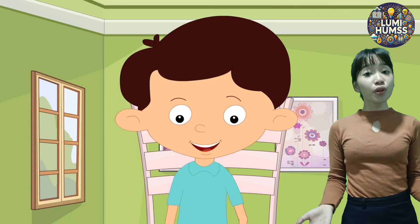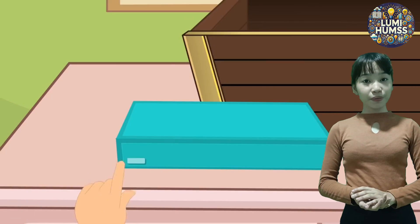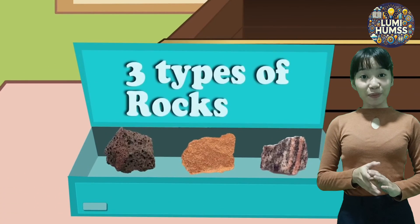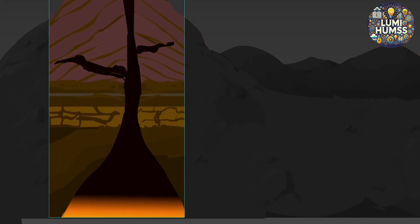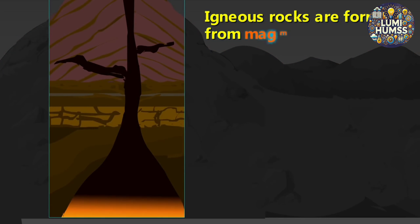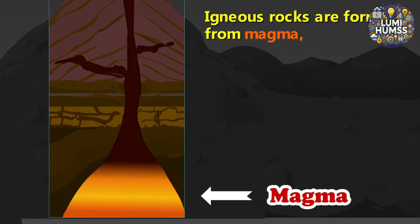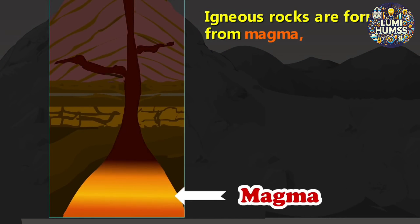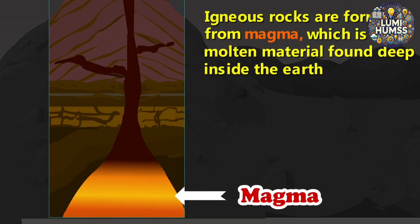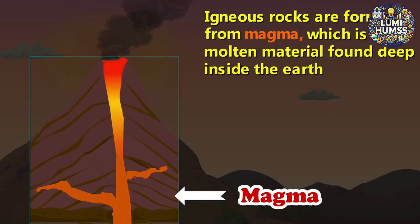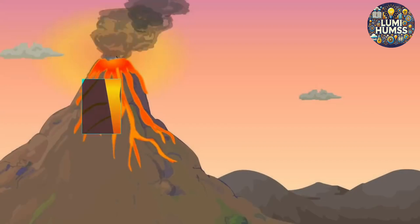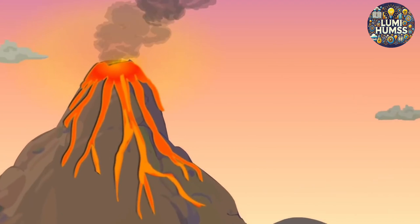Rocks are not just simple stones. There are three major types of rocks. The first is igneous. It's rock formed when molten rock — magma or lava — cools and solidifies. When formed inside of the earth, they are called intrusive or plutonic. But if they are formed outside on earth's surface, they are called extrusive or volcanic.